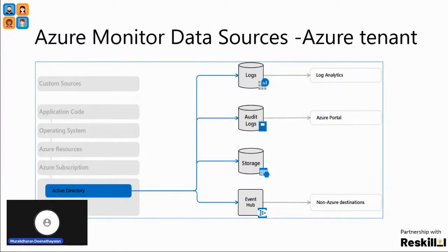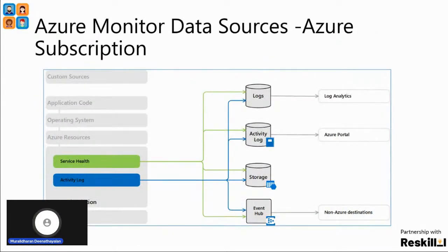Let's see how Azure Active Directory can be used as a data source. Logs from Azure Active Directory can be stored in the log analytics database, or audit logs can be viewed within the Azure portal itself. All data will be stored in the storage area. If you want to send all events to a different system outside Azure, then we can use Event Hub — these Active Directory events can be stored in non-Azure destinations. For Azure subscriptions as a data source, we have service health and activity logs. All activity logs can be stored in log analytics and can be sent via Event Hub to outside destinations.